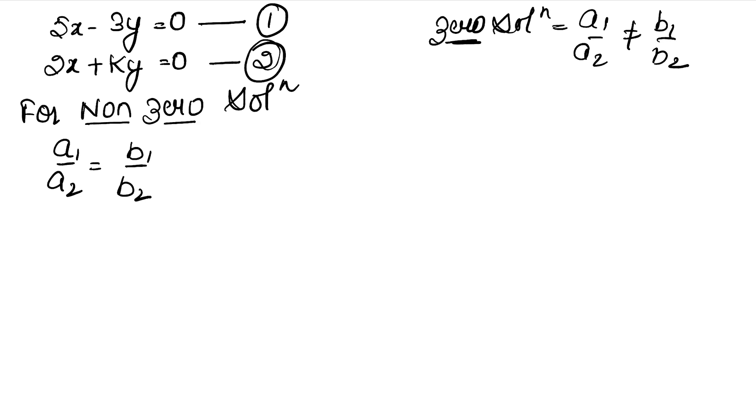What is A1? A1 is 5, A2 is 2, B1 is minus 3 and B2 is K.